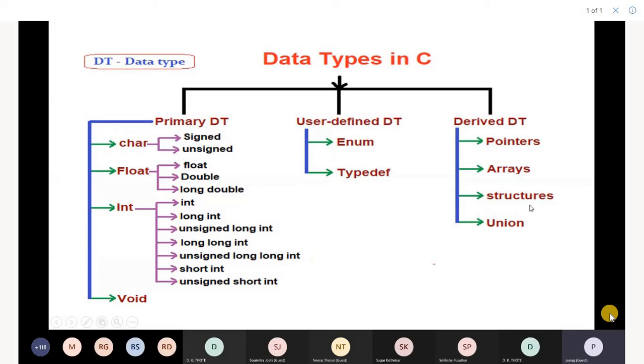Structure. Structure is a combination of different data types. It is created using struct keyword: struct, structure name, opening and closing braces, char name, int age, float basic salary. Structure ends with semicolon and variable name.